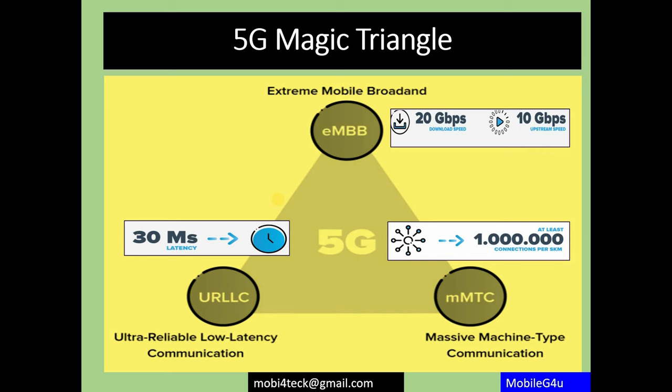The third part is URLLC — ultra reliable low latency communication. Latency refers to how fast you can do something; the target is around 30 milliseconds. These three components — eMBB, URLLC, and mMTC — form the 5G magic triangle, which 3GPP and many standard bodies are working on. This is currently happening in front of us.